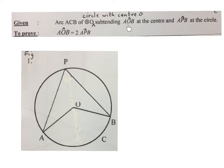subtending angle AOB at the center and APB, the angle at the circle, that angle at the outside. So this arc is subtending this angle and that angle. They ask us to prove that AOB is equal to 2 times APB, which I just explained to you.